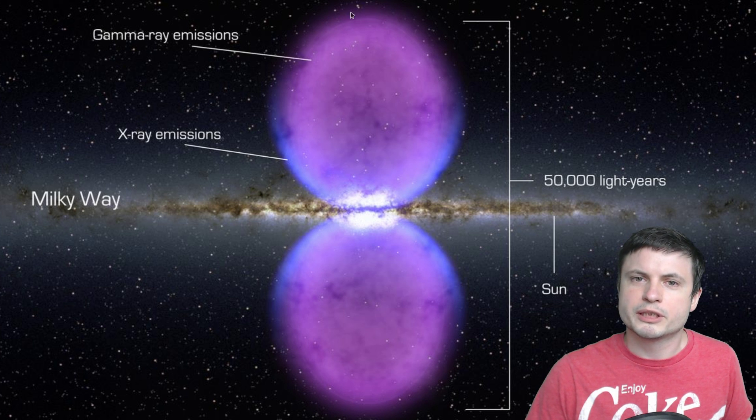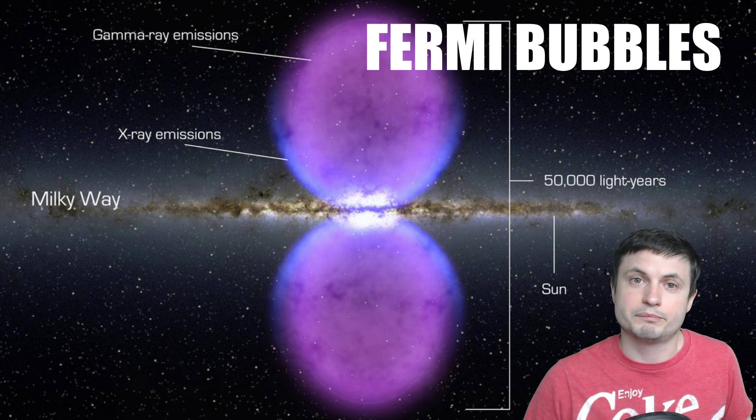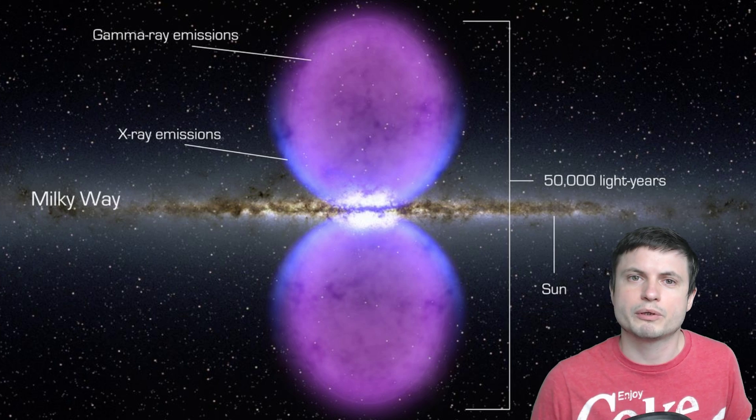So these unusual bubble-like formations are today called Fermi bubbles. We've detected them pretty much completely by accident, but we've known about them for roughly around nine years now, but we still don't really know what they are.